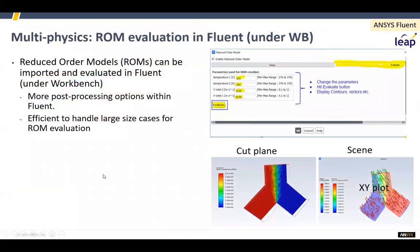If you build a ROM — a reduced order model — within Fluent, those models allow you to input parameters within a range and quickly get results. You can now read those into Workbench using a ROM reader, and then use them to both calculate and plot the behavior of your ROM.